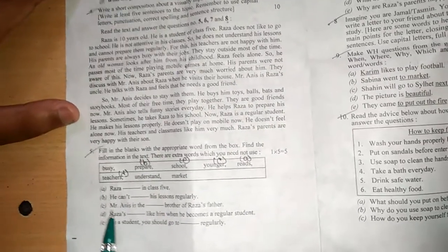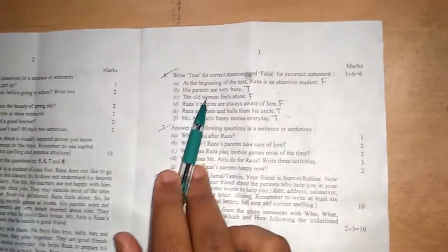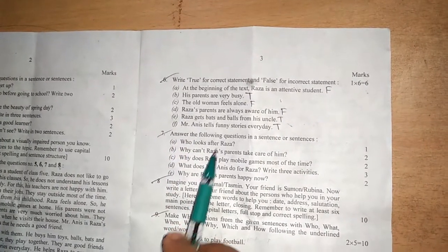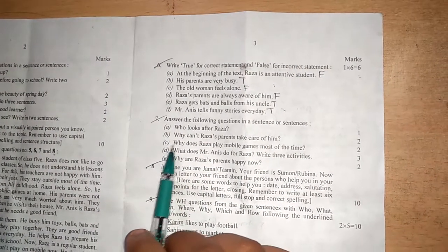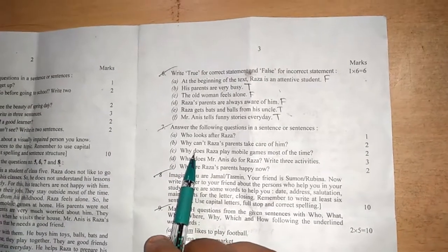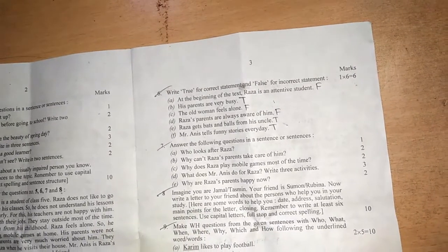Now in number five, there are five fill in the blanks from the given unseen passages. Now in number six, there are six true false from the given unseen passages. Now in number seven, there are five questions,